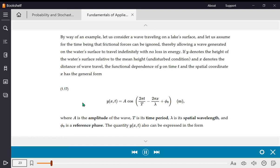Where A is the amplitude of the wave, T is its time period, lambda is its spatial wavelength, and phi naught is a reference phase. The quantity Y of X, T also can be expressed in the form...